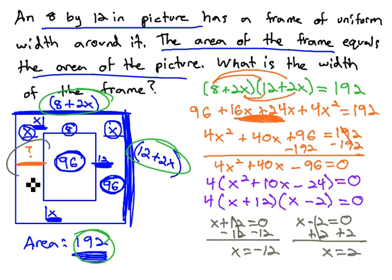However, if x is representing the width of the frame, it wouldn't make any sense to have a negative value. So x, the width of the frame must be 2. It's a 2 inch wide frame, so that the area of the frame is equal to the area of the picture.